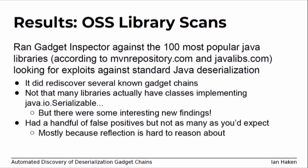After building this tool on a 10-hour flight to Europe, I ran it against the 100 most popular libraries according to mavenrepository.com, looking for exploits against the standard Java deserialization library. It successfully rediscovered some known gadget chains — so it's at least doing what it claims to do. It didn't find a ton of new classes implementing Serializable, but it did have some new findings and a handful of false positives, mostly because reflection is hard to reason about — but just a dozen, easy to rule out.